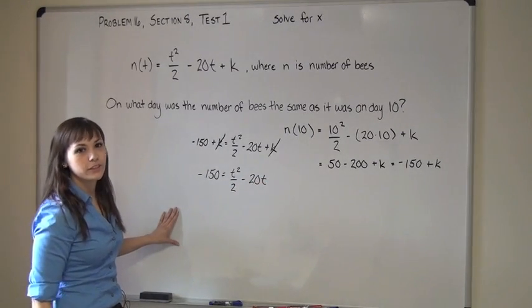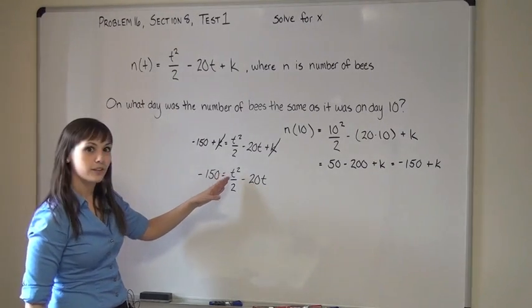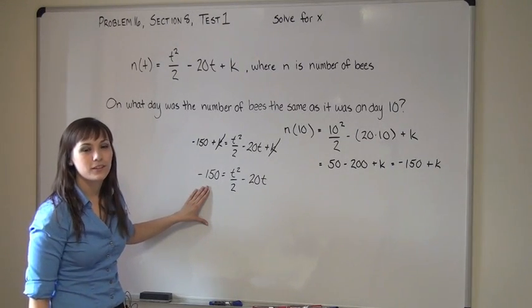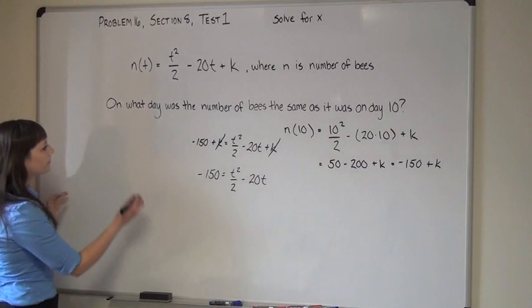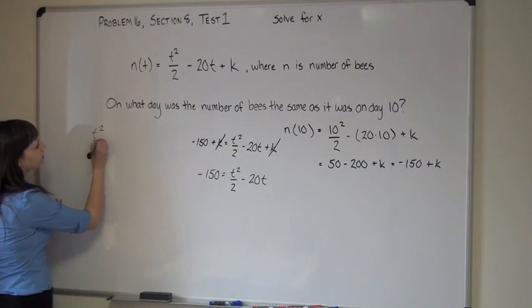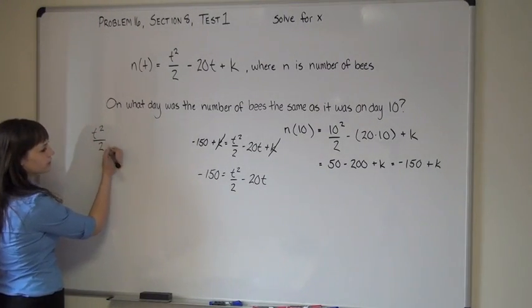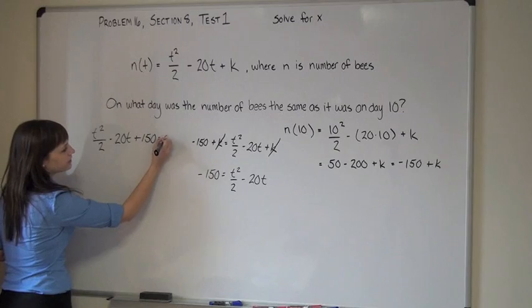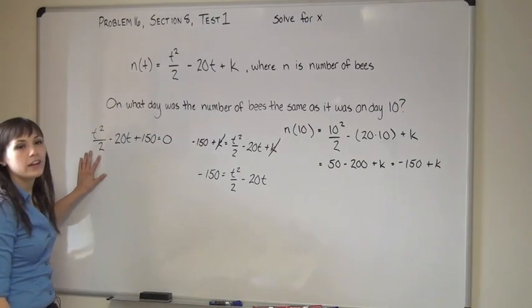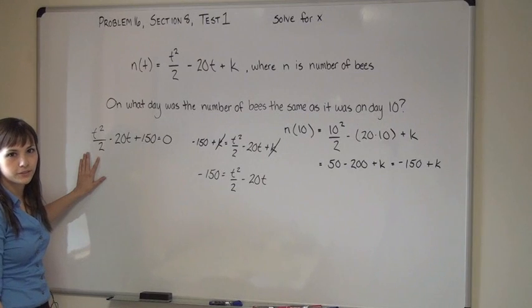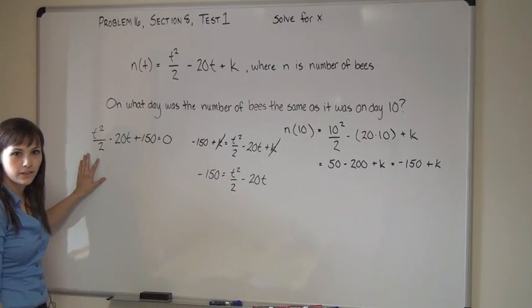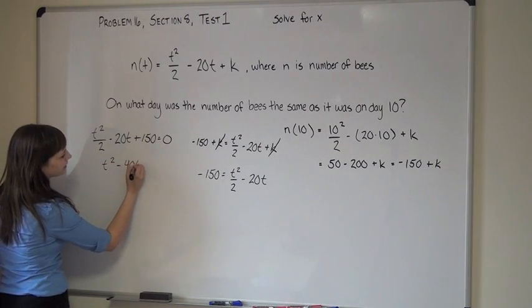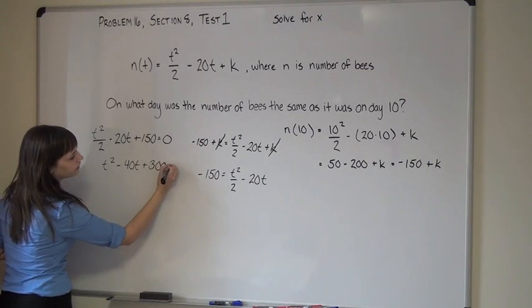Any time you're solving for a variable and you end up with an equation with a t squared, a t, and a constant term, that's a good indication it's time to factor. So let's put this in a form that's easier to factor: t squared over 2 minus 20t plus 150 equals 0. Having a one-half coefficient on that quadratic term makes it difficult to factor, so let's make our lives easier by multiplying everything by 2. We'll get t squared minus 40t plus 300 equals 0.